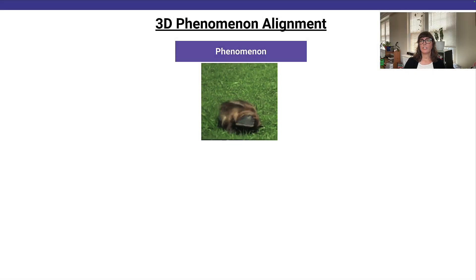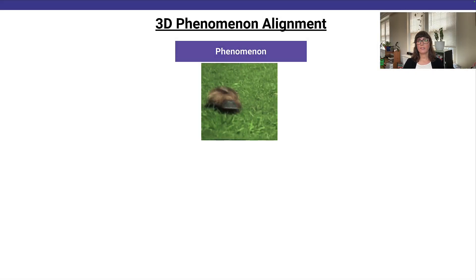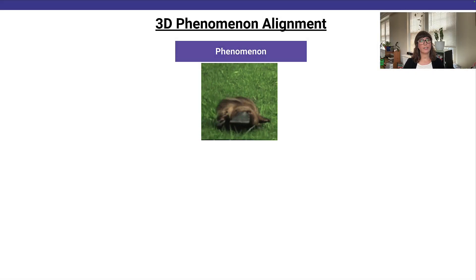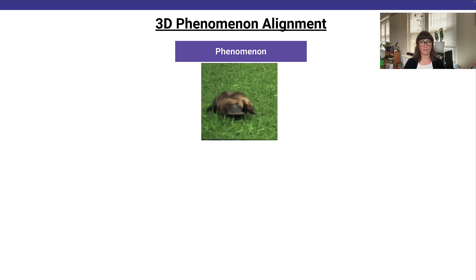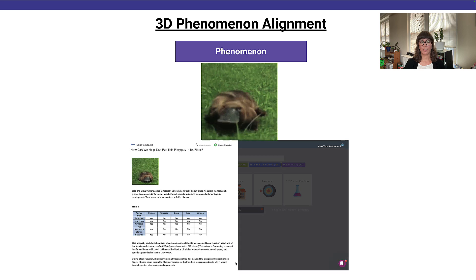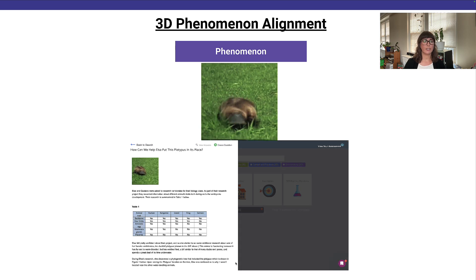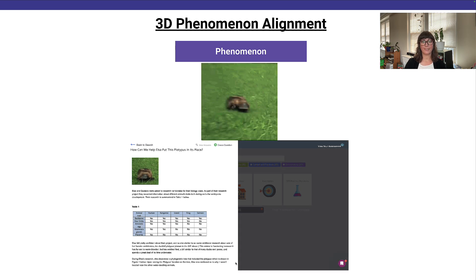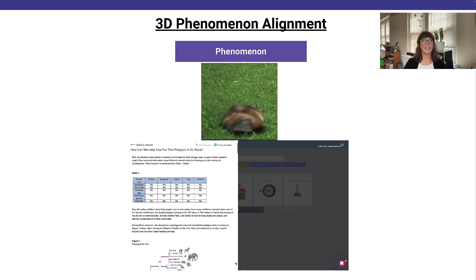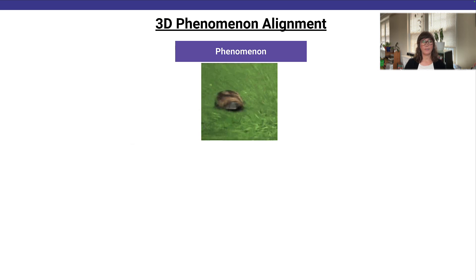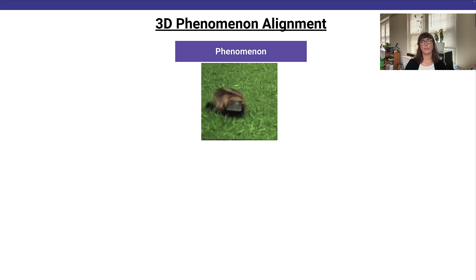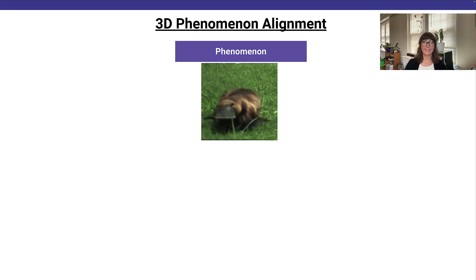But how can you as the teacher know that the phenomena you select on InnerOrbit will accurately assess the performance expectation? Let's use the phenomenon "How can we help Elsa put this platypus in its place?" as an example. Students are introduced to an evolutionary marvel they may never have heard about before — the duckbill platypus. This animal is fascinating because it has fur and is warm-blooded, but it also has webbed feet and a bill similar to that of many ducks. It also spends a great deal of its time in the water, and it lays eggs.